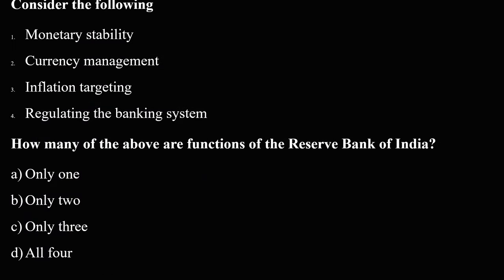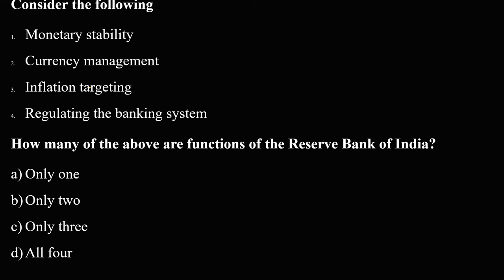The next question: Consider the following — monetary stability, currency management, inflation targeting, and regulating banking sector. How many of the above are functions of RBI? The answer is all four. Monetary stability is a function of RBI; currency management is also a function of RBI; inflation targeting is also a function of RBI; and regulating the banking system is also a function of RBI.